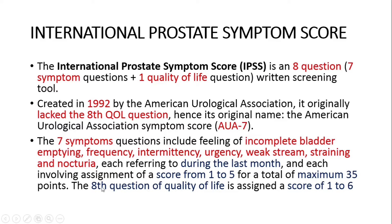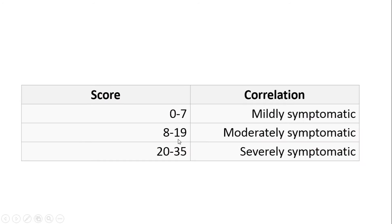The 8th question — the quality of life question — has a score of 0 to 6. Out of these 35 total points, we can classify the patient as mildly symptomatic if the score is 0 to 7, moderately symptomatic if the score is 8 to 19, and severely symptomatic if the score is 20 to 35.